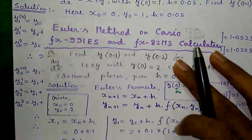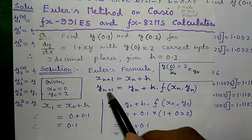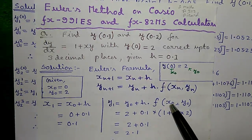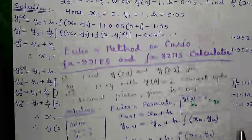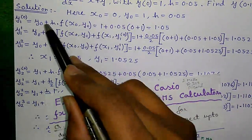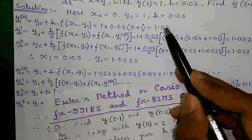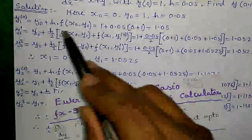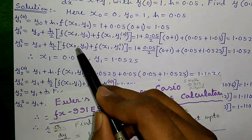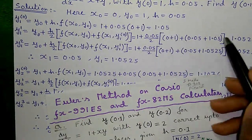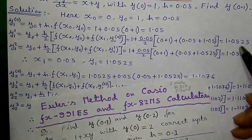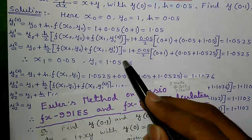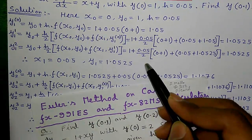One thing to note: in the original Euler's method, y1 is given by y0 plus h into f(x0, y0) — this formula is the same as the predictor step — and we stop there. But in Modified Euler's method, we do repetitive corrector iterations to get a more accurate value, stopping when we get exactly the same value in two successive iterations. That is why Modified Euler's method is more accurate than the original Euler's method.